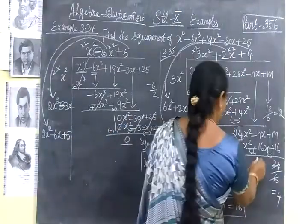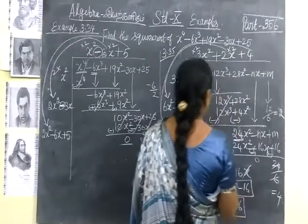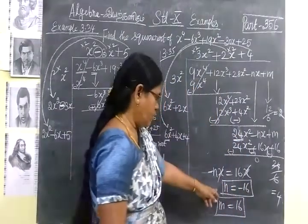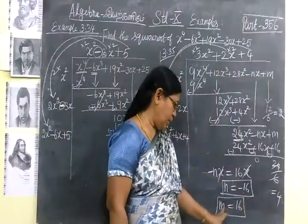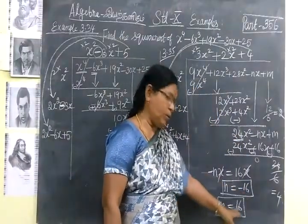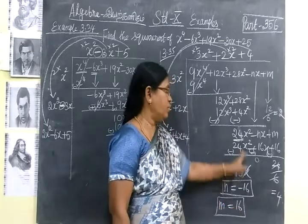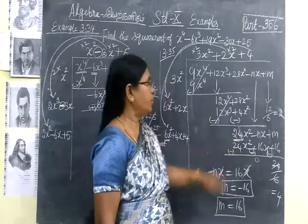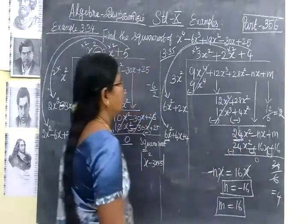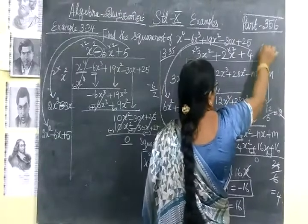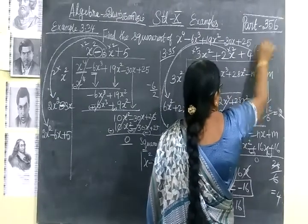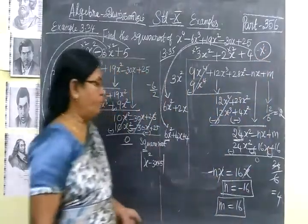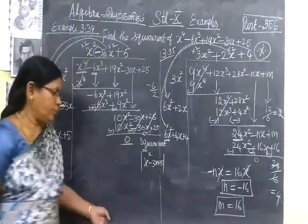So the answer for this: n equal to minus 16, m equal to 16. Since it is given as a perfect square, the square root for this is confirmed. This is very, very important and is asked many times. There are 5 more questions. Thank you.